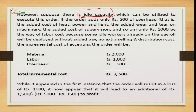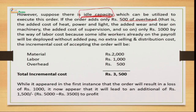If the same order comes to management's attention when they have idle capacity, we consider the same example but change the situation. Previously we calculated on the basis of full cost; now we calculate the same order on the basis of incremental cost. Suppose there is idle capacity that can be utilized, and the order adds only 500 in overhead — previously overhead expenses were 1,800 but now reduced to 500 — only the extra expenses specifically for this order are calculated.